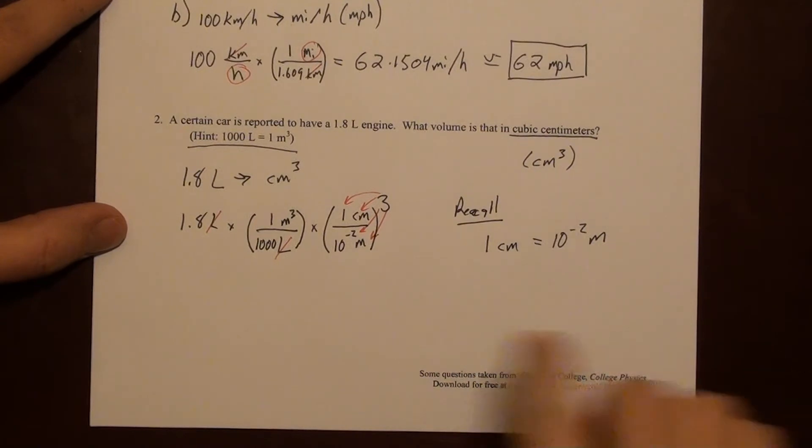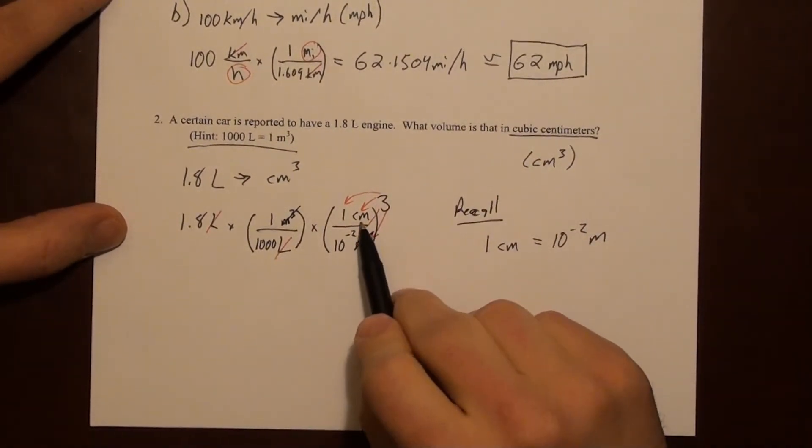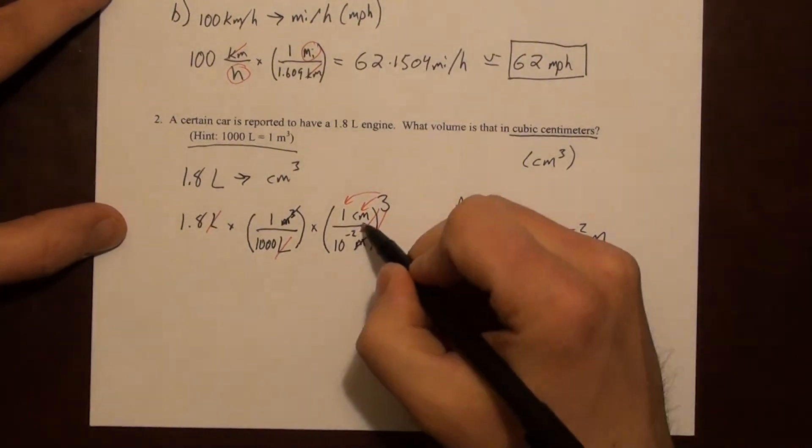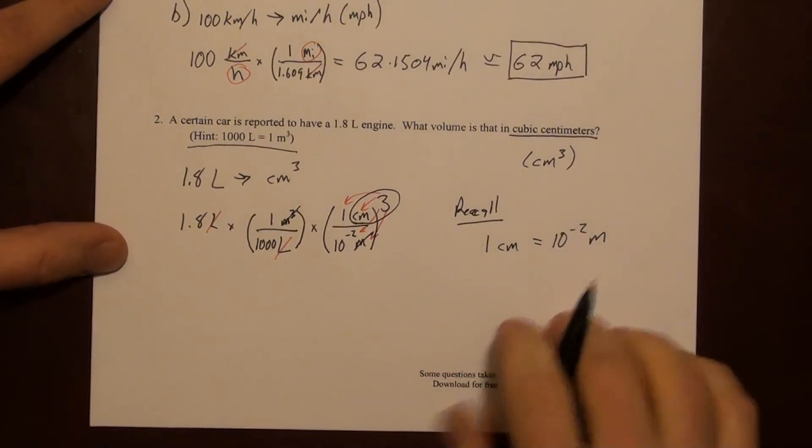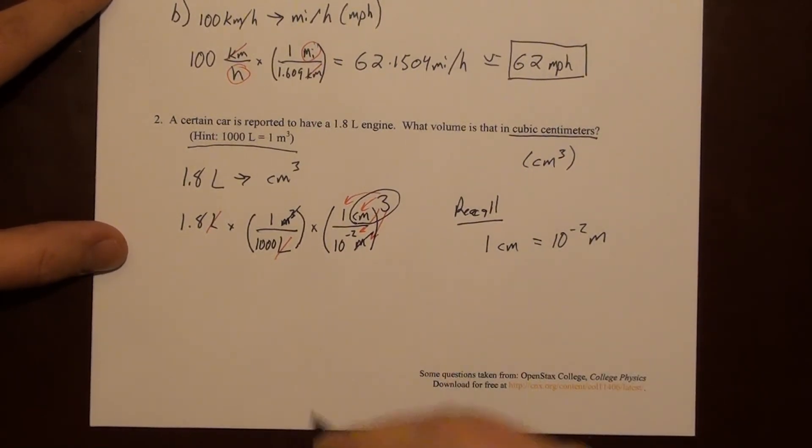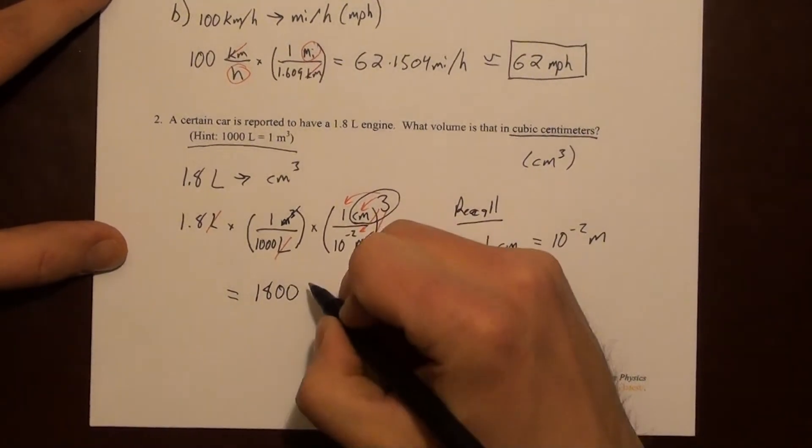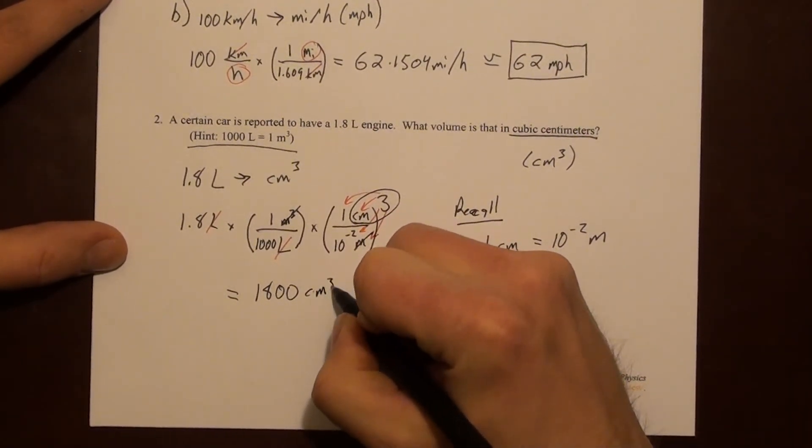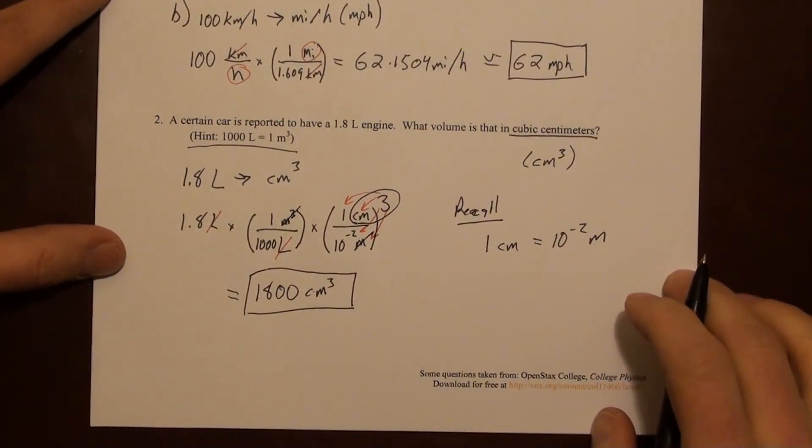So that we do end up - meters cubed goes away. We do end up with cubic centimeters. Cubic centimeters here. So when you do this math, you end up with 1,800 cubic centimeters. And that's it.